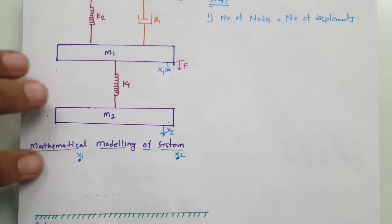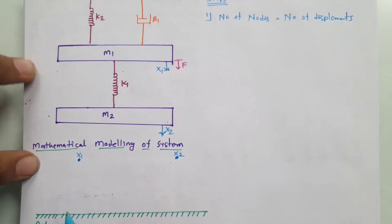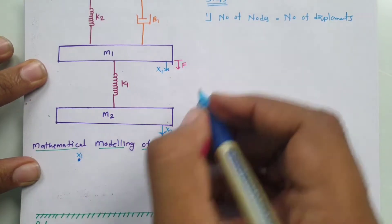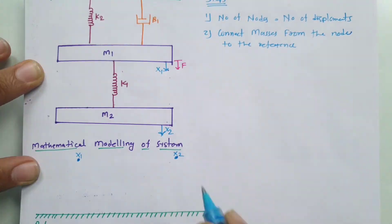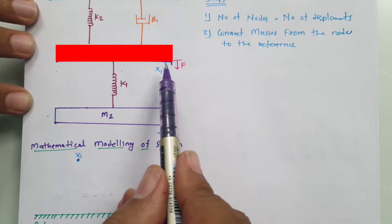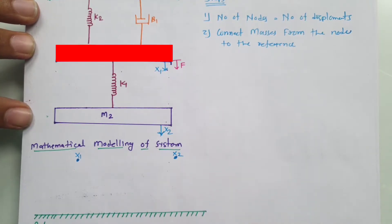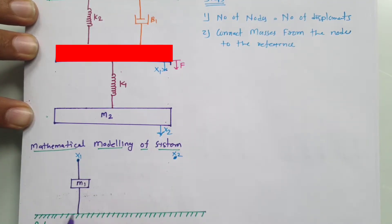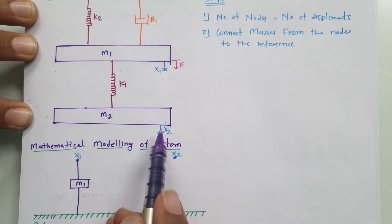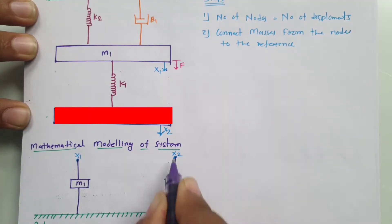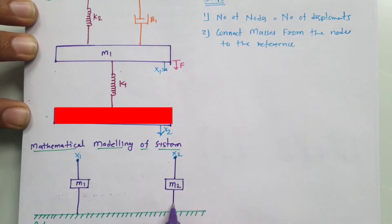In the second step, we need to connect masses from the node to the reference. Mass m1 is connected with node x1, so I need to connect mass m1 from node x1 to the reference. Mass m2 is connected with node x2, so I need to connect mass m2 from node x2 to the reference.